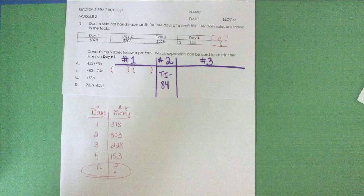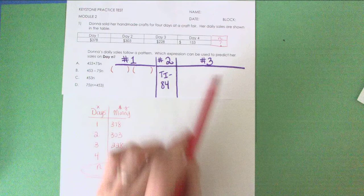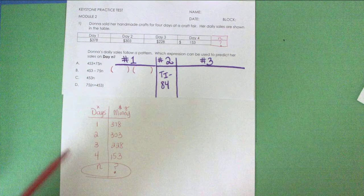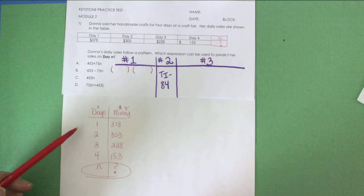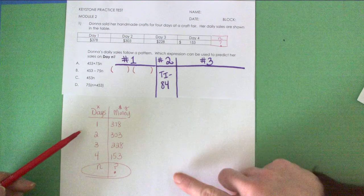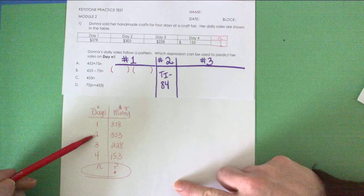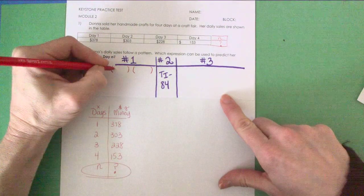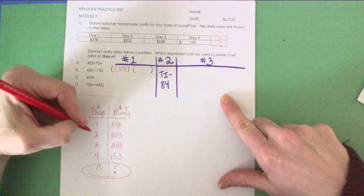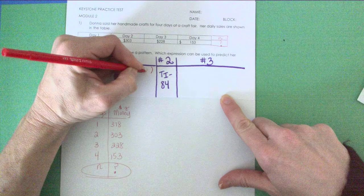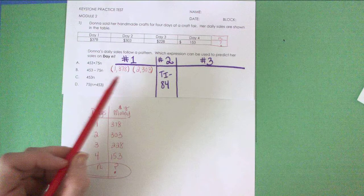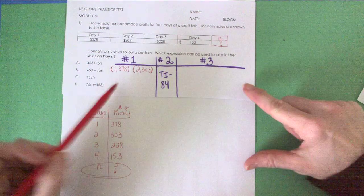I'm actually splitting this into three different ways your brain may have taken you on this question. The first way is whenever I'm given a table, I like to pick two ordered pairs off of that table and write the equation Y equals MX plus B. So I'm going to start with the first two points: the point 1, 378 and the second point 2, 303, and I'm going to write the equation of the line through these two points.